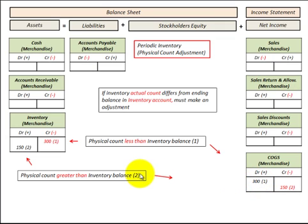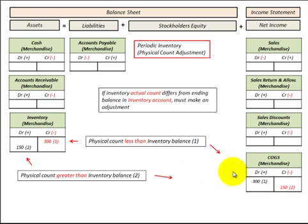If the physical count is greater than the inventory balance, we debit or increase inventory by $150, and the corresponding credit entry is to Cost of Goods Sold — we reduce that by $150.